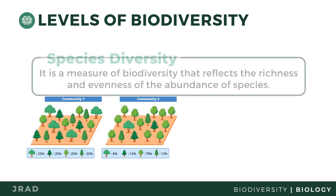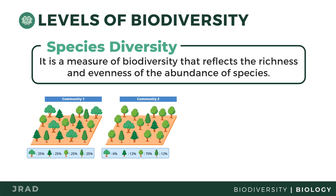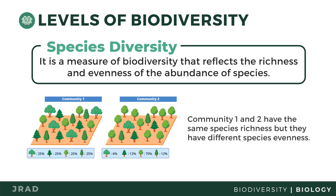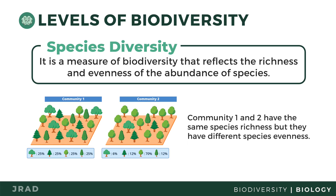One basic unit of biological classification is an organism's species. A species is defined as the group of organisms that can interbreed. The species diversity of a community can be described based on the number of species present, its richness, or its evenness — the abundance of each species relative to each other.